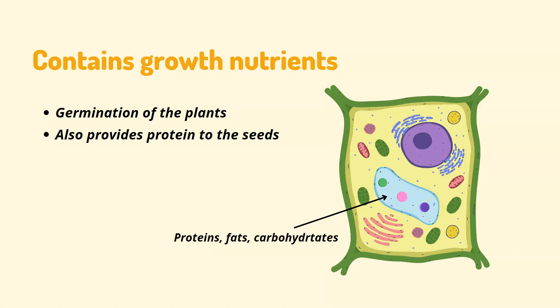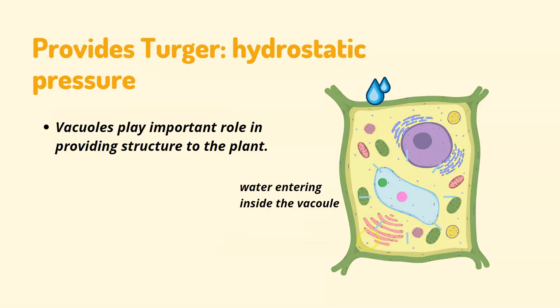Another function: vacuoles contain growth nutrients like proteins, fats, and carbohydrates for the growth and germination of plants. Vacuoles also provide turgor — meaning rigidity — to the plant cell. Let us understand how.